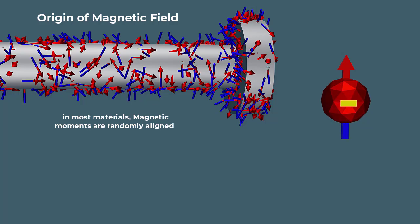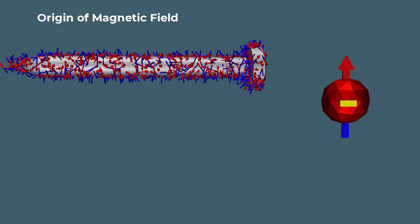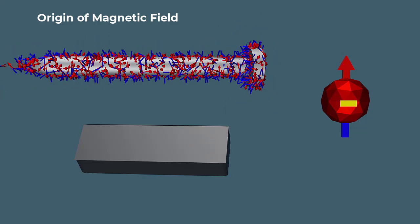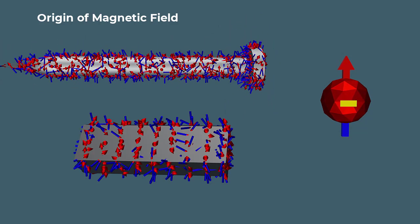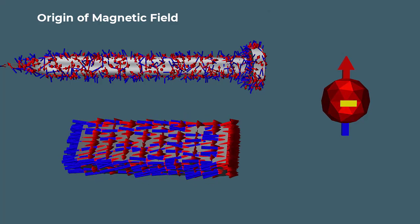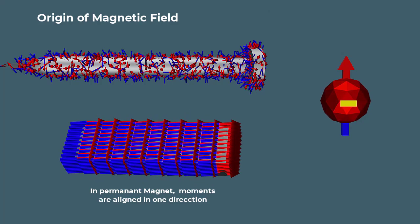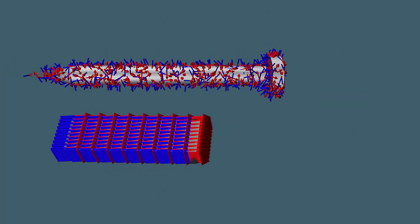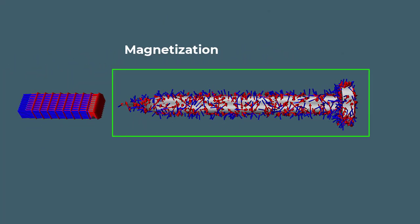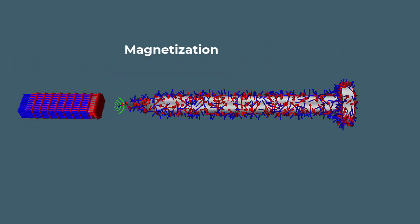In most materials, these little magnetic fields point in random directions and cancel each other out. But in some materials, like permanent magnets, the magnetic moments tend to line up, making a much stronger overall magnetic field.